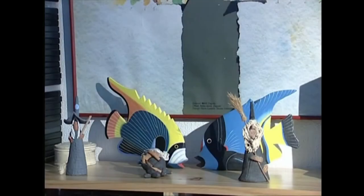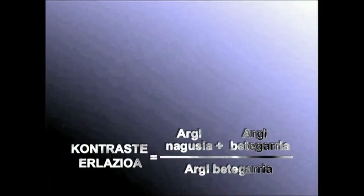Kontrasteaz ari garenean, argiztatze kontrasteaz ari gara. Hau da, ezenako gune argienen eta ilunenen artean dagoen erlazioa adierazten duen balioaz. Kontraste erlazioa kalkulatzeko formula hau erabiltzen da: argi nagusia gehi argi betegarria, zati argi betegarria, berdin argiztatze kontrastea.